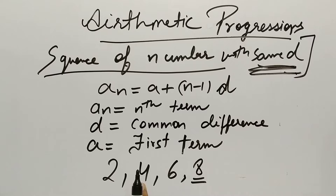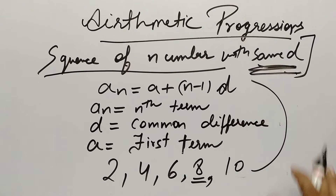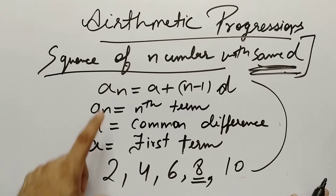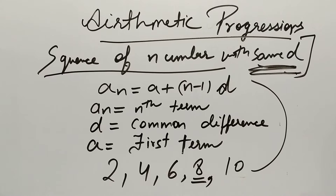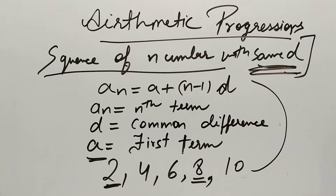Now let's come to the formula for the nth term. The common difference d: 4 minus 2 is 2, 6 minus 4 is 2, 8 minus 6 is 2 — that is the common difference. And we also have the first term a.